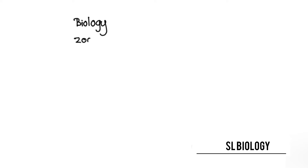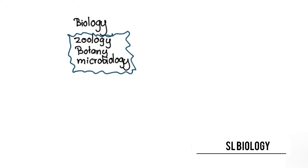For the convenience of studying, we divide biology into three primary branches: zoology, botany, and microbiology. Zoology is the study of animals and botany is the study of plants. Microbiology is the study of microorganisms like bacteria — the organisms that we can't see with our naked eye.